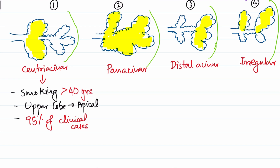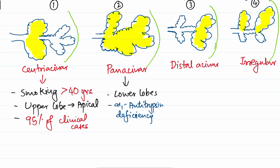Panacinar emphysema is more common in the lower lobes. It is associated with alpha-1 antitrypsin deficiency, which is an antiprotease — we'll discuss its role in pathogenesis shortly.